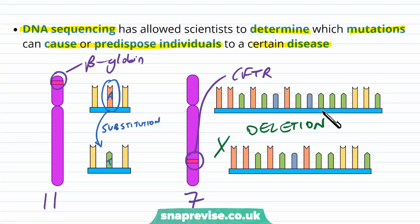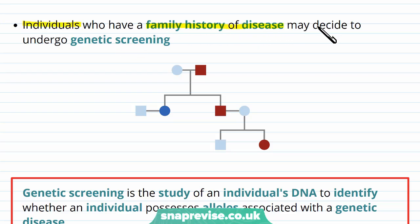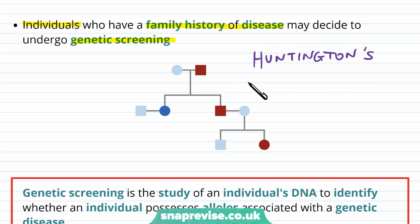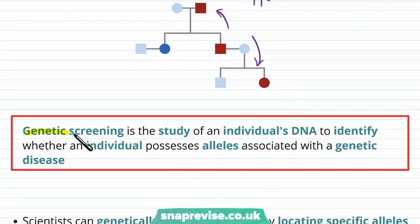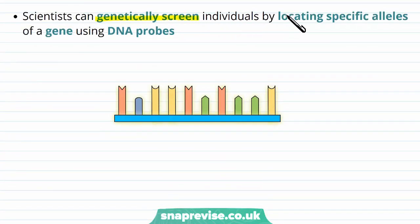By looking at all the DNA, scientists have realized certain mutations predispose people to certain diseases. Individuals with a family history of disease might undergo genetic screening — for example, for Huntington's disease. Genetic screening is the study of an individual's DNA to identify whether they possess alleles associated with a genetic disease, looking at their own genome or that of their parents or children. Scientists can genetically screen individuals by locating specific alleles using DNA probes.